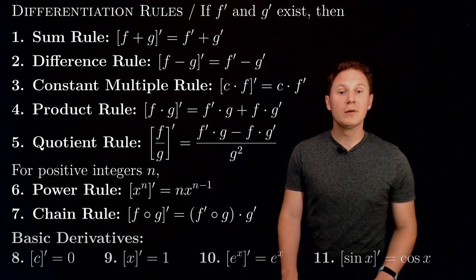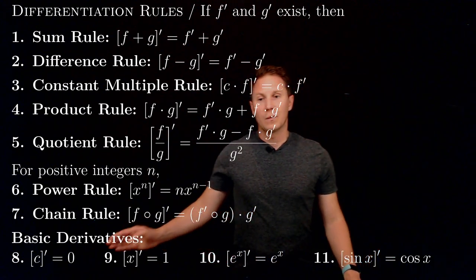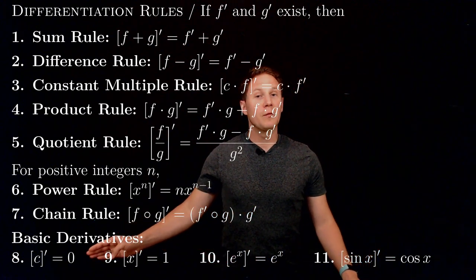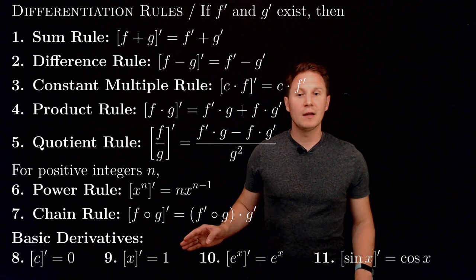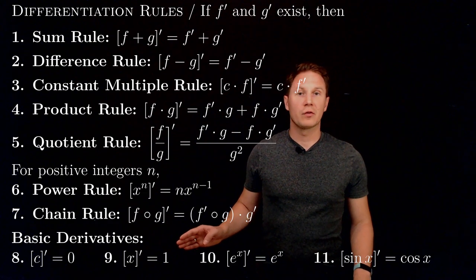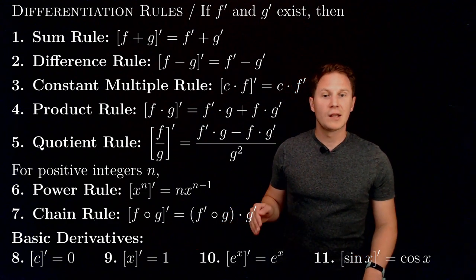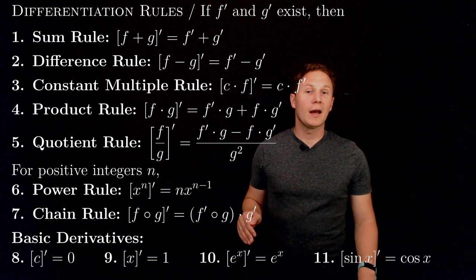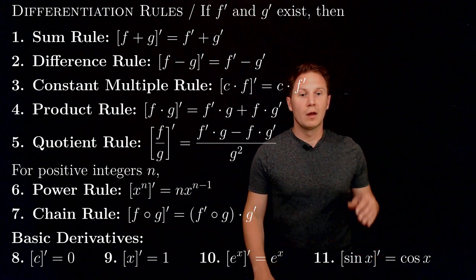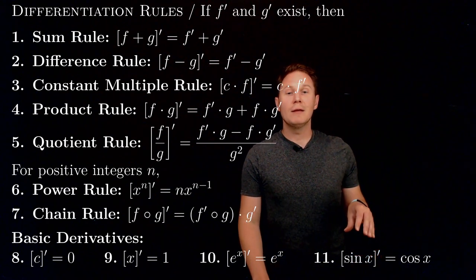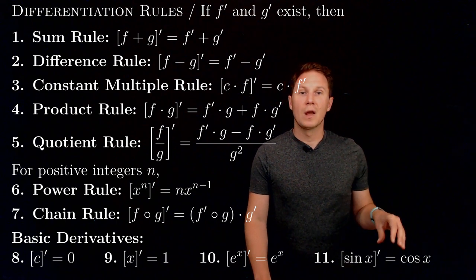Finally, we have the basic derivatives: the derivative of any constant is zero; the derivative of x with respect to x is one; the derivative of e to the x is itself, e to the x; and the derivative of the sine function is the cosine function.